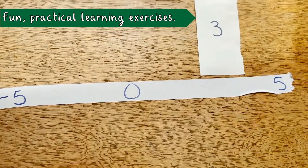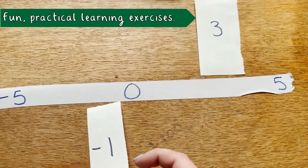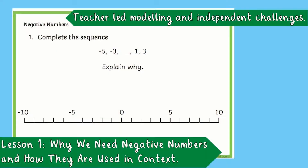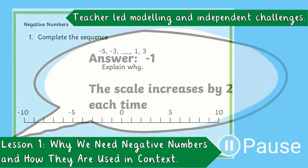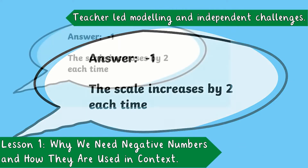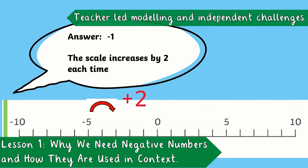What about the number minus one? Well, that would go right next to zero. Now try this: complete the sequence using this number line. The answer is minus one, and the scale increases by two each time. We know this because if we use the number line, you can count two between each number.